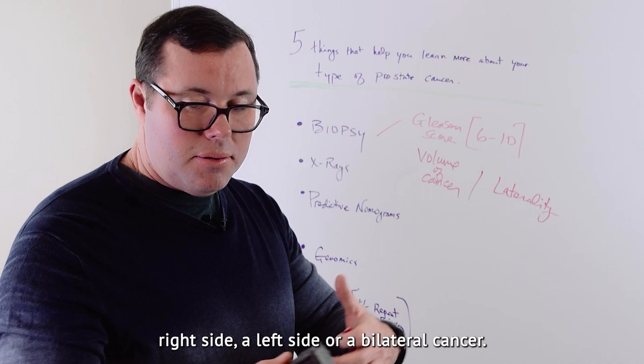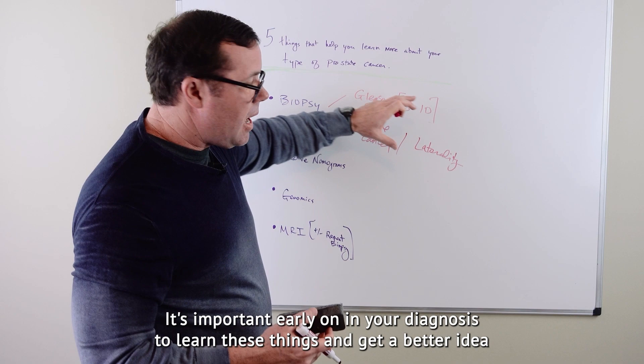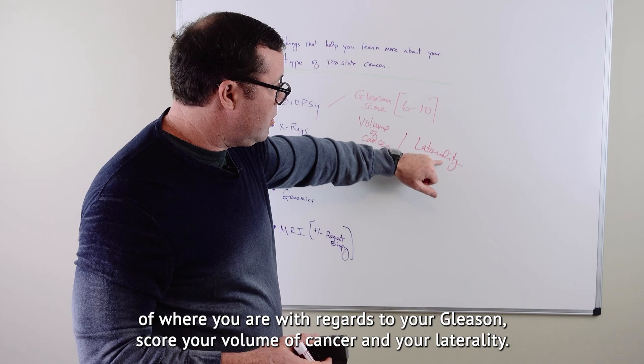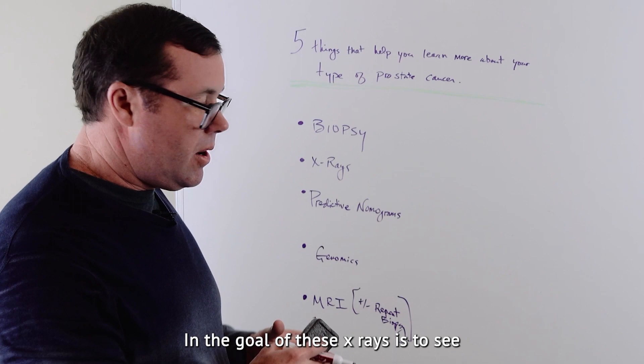Are you dealing with a cancer on one side of the prostate or on both sides of the prostate potentially? Because treatments differ based on whether the cancer is local to one area or it's in numerous areas in that prostate. So laterality is important and knowing whether this is a right side, a left side, or a bilateral cancer. So that's the biopsy. These are important. It's important early on in your diagnosis to learn these things and get a better idea of where you are with regards to your Gleason score, your volume of cancer, and your laterality. So moving on to the next, x-rays.